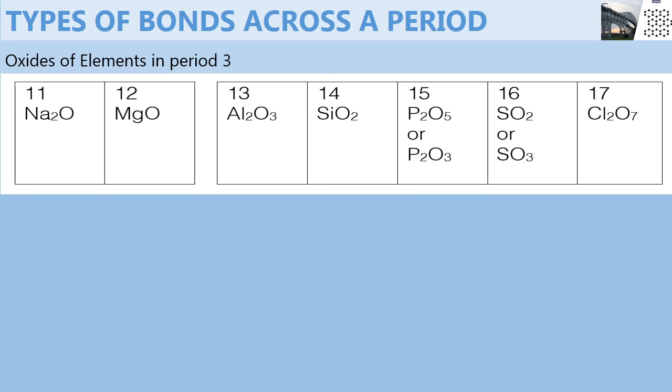The rest of the members, which are phosphorus, sulfur, and chlorine, form different types of oxides. For example, phosphorus forms two types of oxides: phosphorus pentoxide or P₂O₅, and phosphorus trioxide or P₂O₃. Sulfur forms SO₂ and SO₃. Chlorine reacts with oxygen to form different compounds. One of the compounds has a formula of Cl₂O₇, known as dichlorine heptoxide.